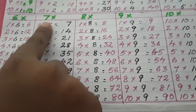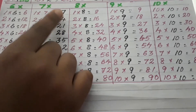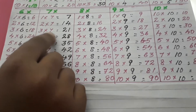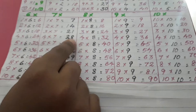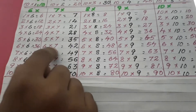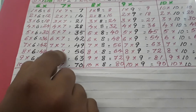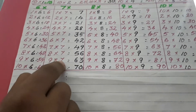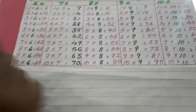Now, let's see table of 7. 1 seven is 7. 2 sevens are 14. 3 sevens are 21. 4 sevens are 28. 5 sevens are 35. 6 sevens are 42. 7 sevens are 49. 8 sevens are 56. 9 sevens are 63. 10 sevens are 70.